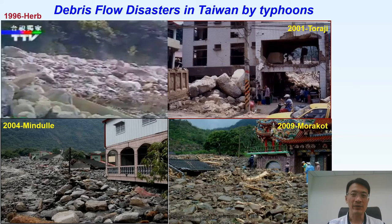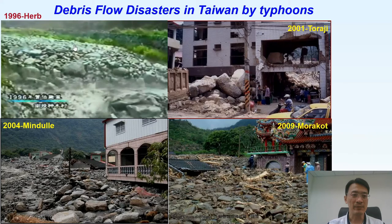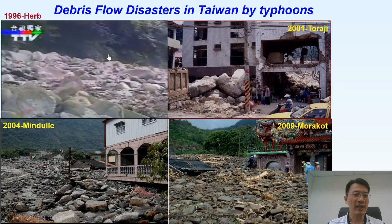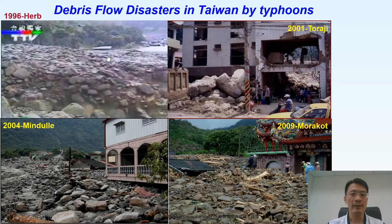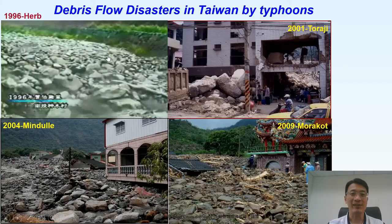As you can see, from Typhoon Herb, which caused the debris flows in the central part of Taiwan in 1996, after the video was televised to the public, people in our country became aware of the severity of debris flow disasters.